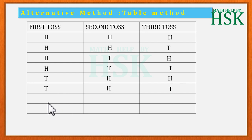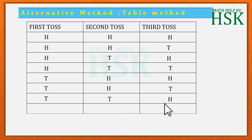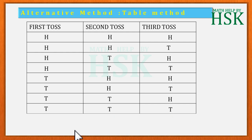If the first toss results in tail, then the second toss can be tail and the third toss can be tail — that is, all three are tails. This completes the outcomes for when the first toss is tail.